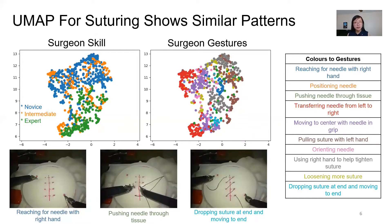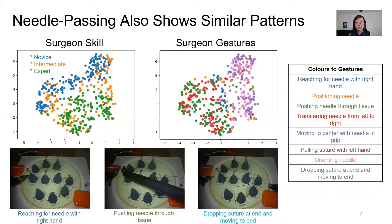For the suturing tasks, the patterns are similar — skill level is separate, and within each skill level, we see gestures forming clusters. The examples of suturing tasks look very different from the knot tying tasks, even though they share some of the same gestures. This is one case where our hypothesis — that the self-supervised method could generalize better over different setups — could come into play. For the needle passing tasks in Jigsaw, a few gestures are less distinct, such as moving to center with needle and gripping and orienting the needle, but both are single-handed maneuvers of the suturing needle, so it's harder to distinguish them.